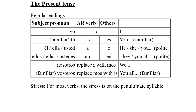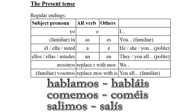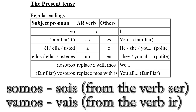The VOSOTROS form — the familiar form of YOU ALL used in Spain — is also quite easy. I usually just work it out when I need it. For most words, I take whatever word I have ending in MOS and change it to IS without changing the position of the stress. HABLAMOS becomes HABLÁIS, COMEMOS becomes COMÉIS, SALIMOS becomes SALÍS. It also works for SOMOS — SOIS — and for VAMOS — VAIS.